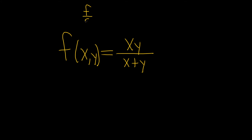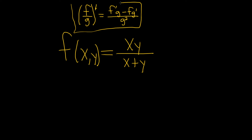If you have two functions f and g, and you divide them and take the derivative, think of f as your top function and g as your bottom function. It's the derivative of the top times the bottom, minus the top times the derivative of the bottom, all over the bottom squared. This is the quotient rule, and we're going to use it to find the partials.